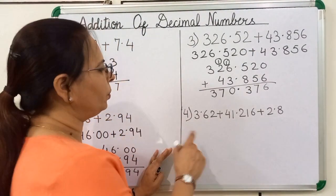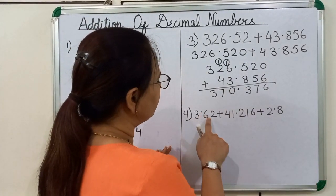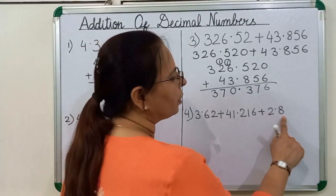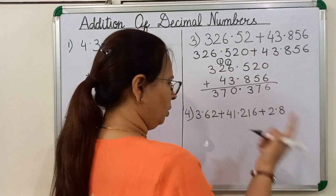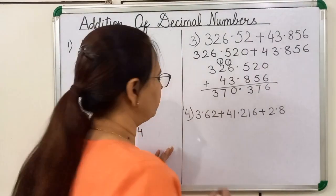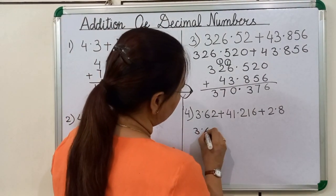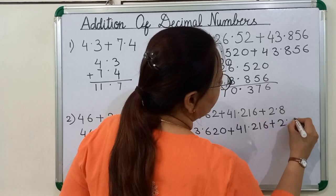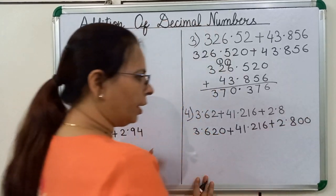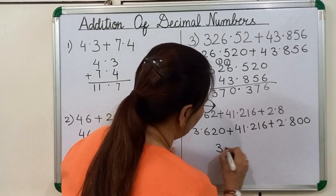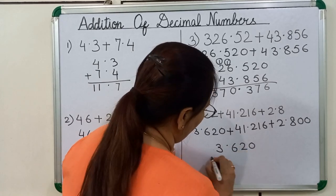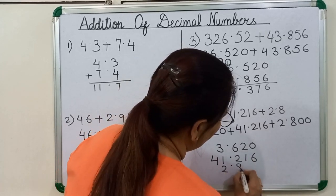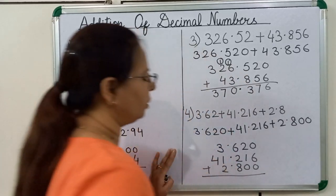Now we will see the last example. Here you can see after the decimal there are 2 decimal places, here 3 decimal places, and there is only 1 decimal place. So we will convert these unlike decimals into like decimals: 3.620, 41.216, plus 2.800. Now we will arrange these decimal numbers according to their place value: 3.620, 41.216, and 2.800.